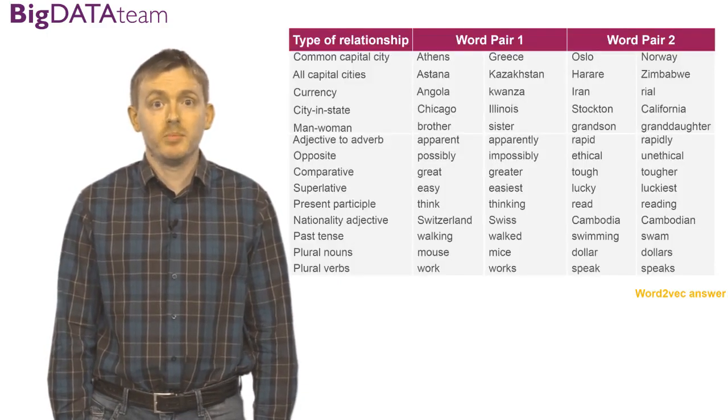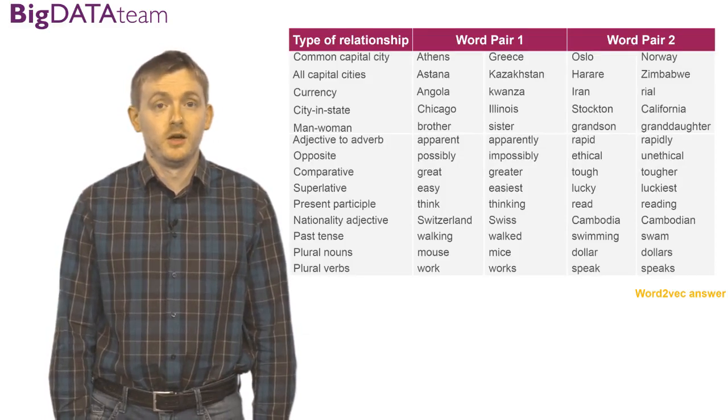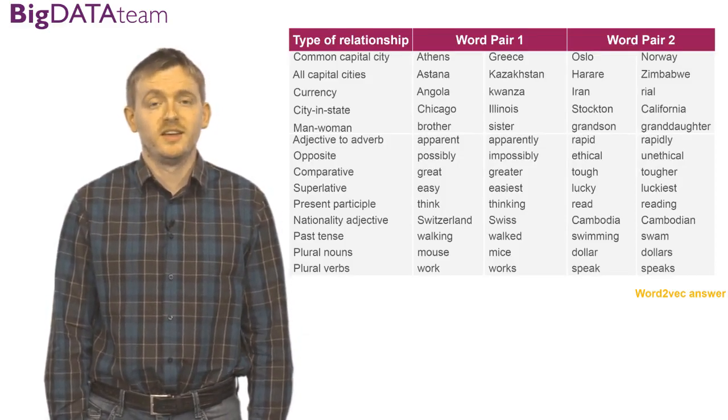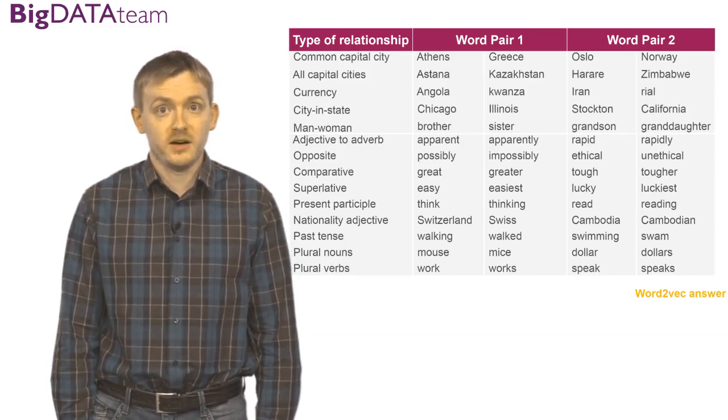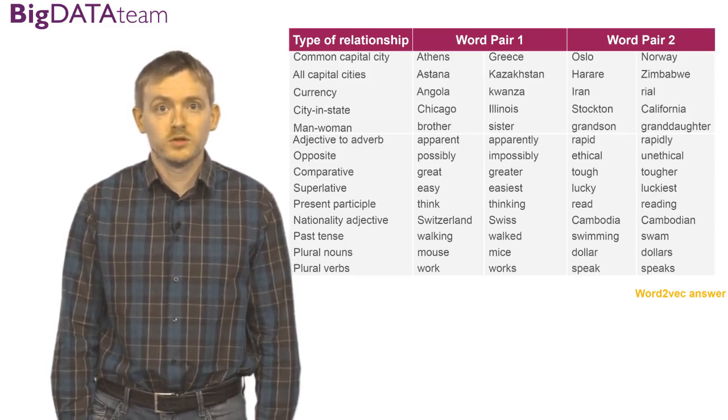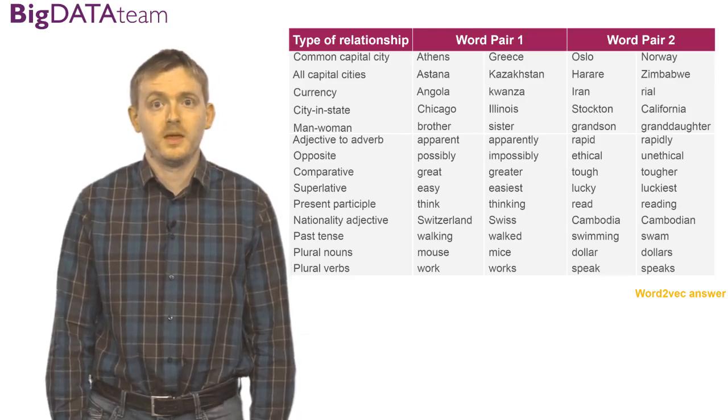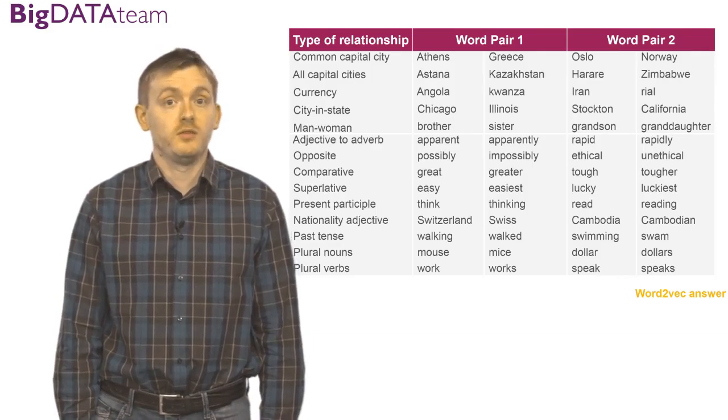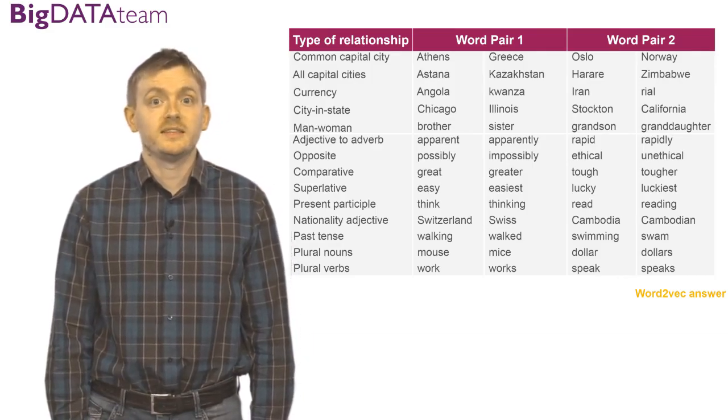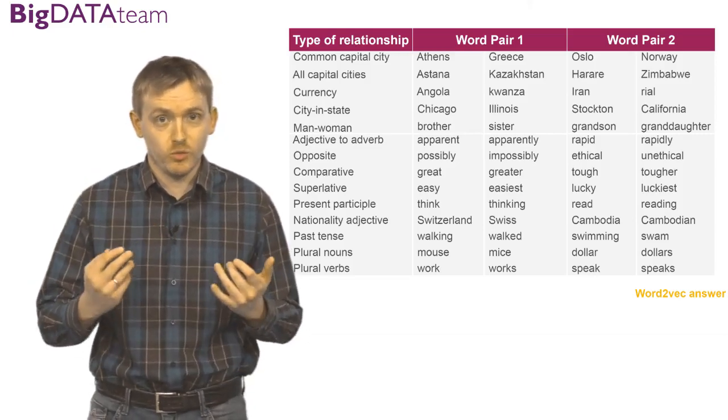Some more examples of the Word2Vec model capabilities. What's going on here? You take two words from the column word pair and one word from the first column of the word pair group. And in the last column, the answer of the Word2Vec model is exactly as in the example with Italy, France, Paris, and Rome.